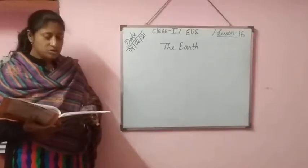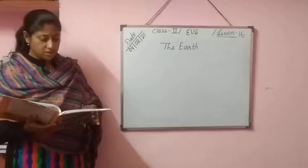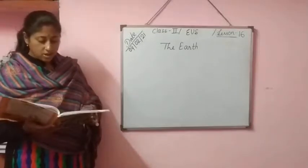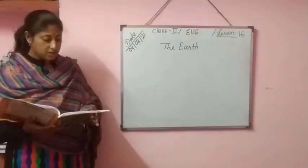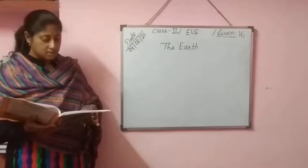Ponds are very small freshwater bodies. These are also surrounded by land on all the sides.